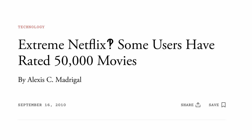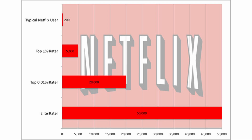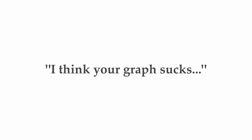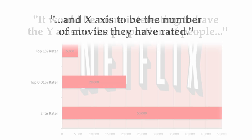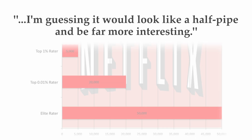It reminds me of when I was in graduate school. I read an article about Netflix ratings — back then the five-star rating system was really big. The article said some users rate like 50,000 movies. Is it even possible to watch 50,000 movies in a lifetime? They showed a graph, and being the arrogant graduate student I was, I said, 'I think your graph sucks.' Most people know the difference between 20,000 and 50,000 — they don't need a graph. It would be more interesting to plot the proportion of people on the y-axis and number of movies rated on the x-axis. I'm guessing it would look like a half pipe and be far more interesting.